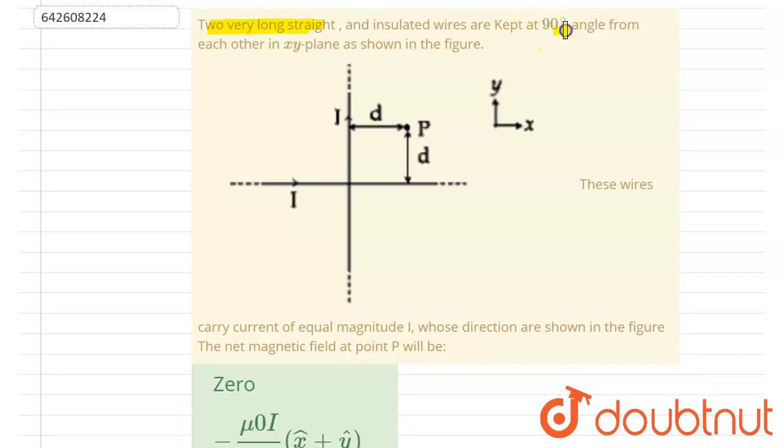Two very long straight and insulated wires are kept at 90 degrees from each other in the xy plane as shown in the figure. They carry equal current of magnitude I whose directions are shown in the figure. Then net magnetic field at point P will be...